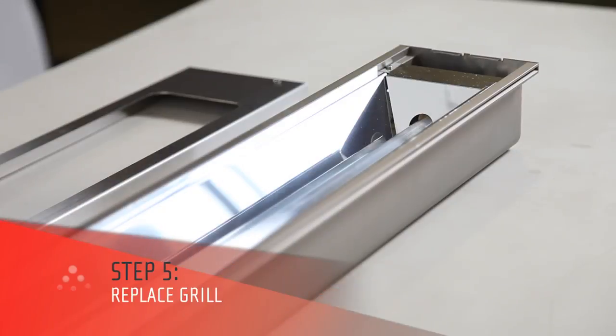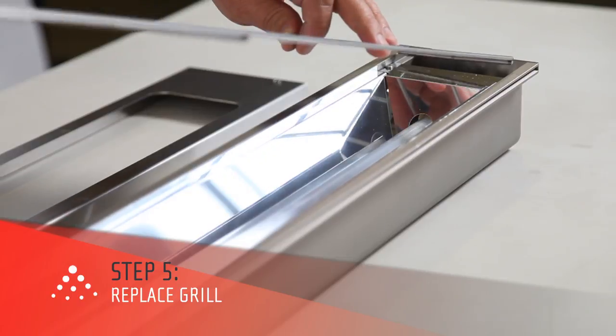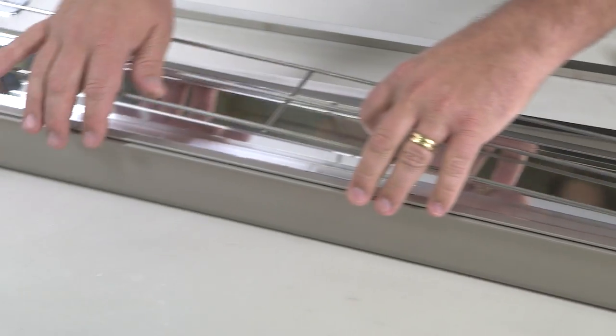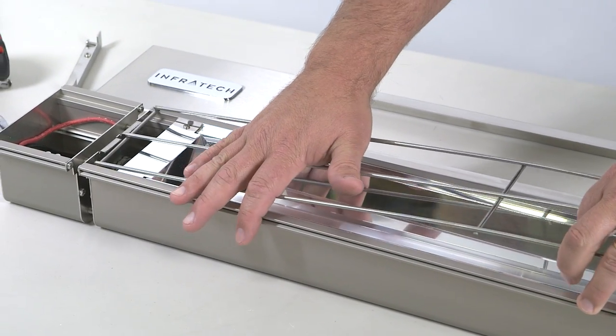You are now ready to replace the grill on the heater. Start by seating the grill on one end. Next, flex up the middle of the grill in order to seat it on the opposite side of the heater.